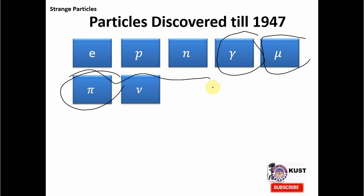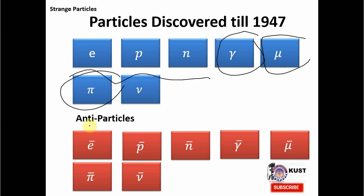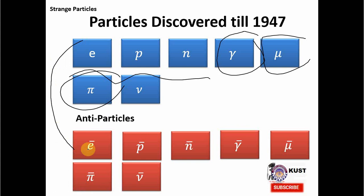There were two big theories — quantum mechanics, which was very much involved in particle physics, and Einstein's special theory of relativity. From the requirements of special relativity, we knew that we have to have antiparticles — that is, every particle has its own antiparticle. For example, the electron has an antiparticle we call the positron. The positron is similar to the electron in all respects, only differing in charge where it has a positive charge.